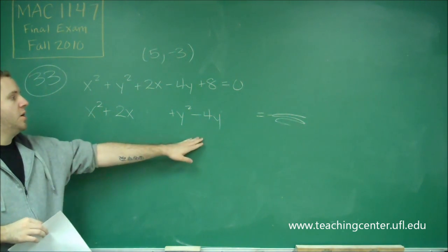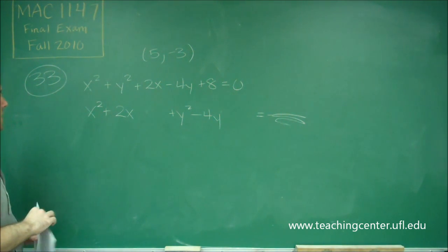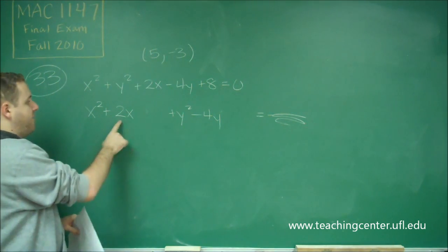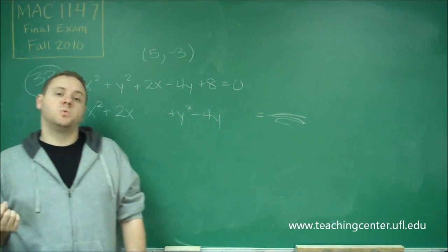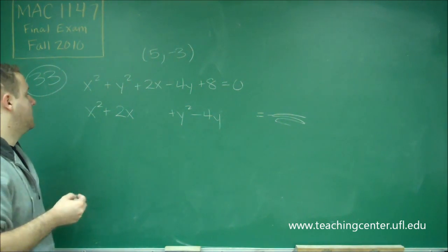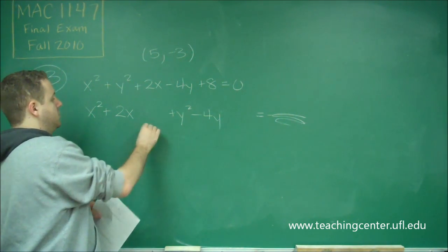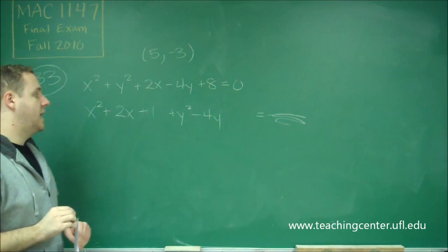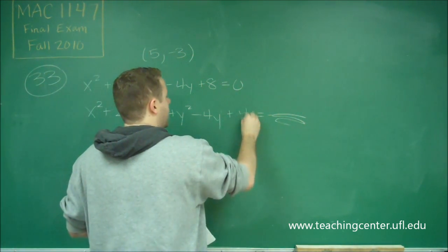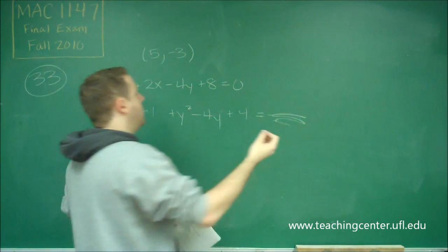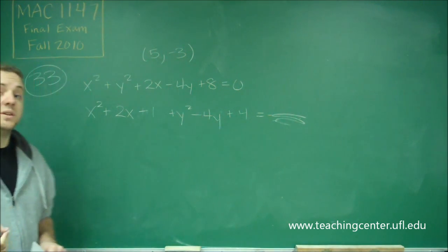So now we just need to complete the square for both of these terms. Remember to complete the square, you take half of the coefficient in front of just x or y, and you square it, and you add it to both sides. So half of 2 is 1, and you square that, you get plus 1. Half of negative 4 is negative 2, and you square that, you get plus 4. And again, we would add those to this side too, but we don't care what the radius is. We're only interested in the center.